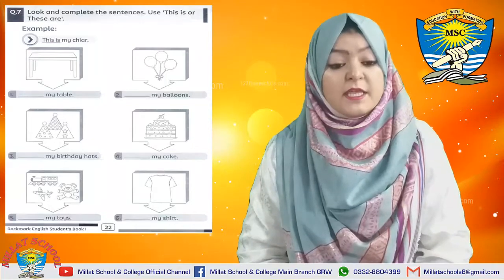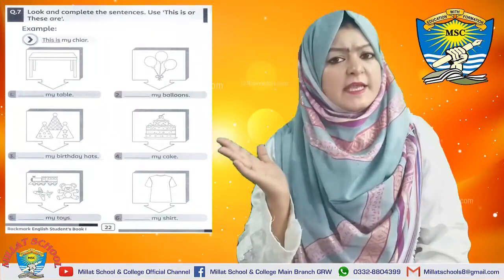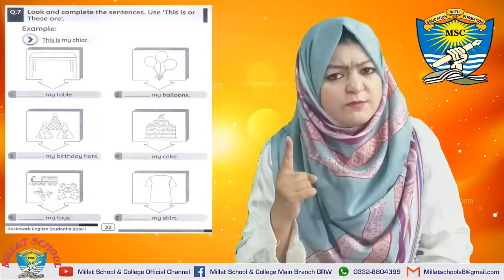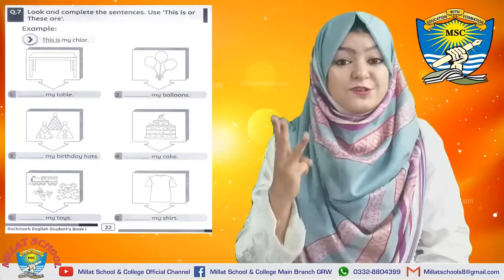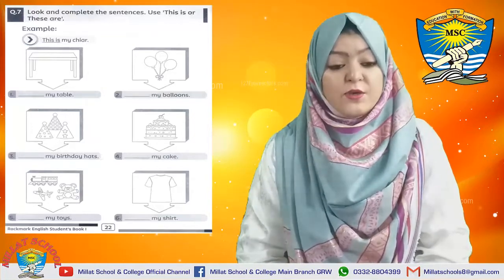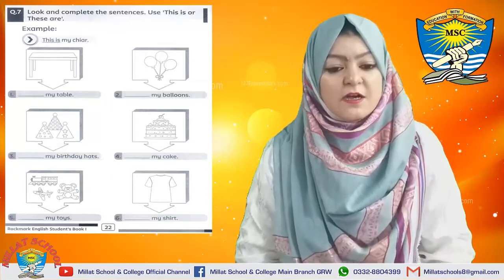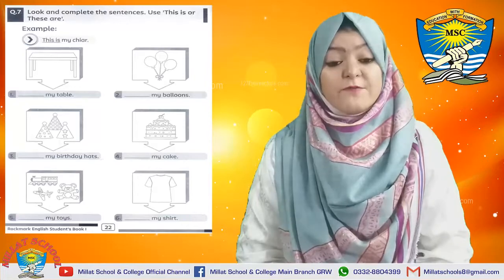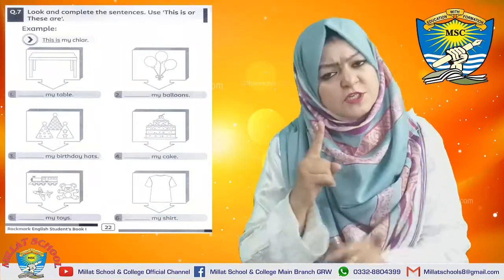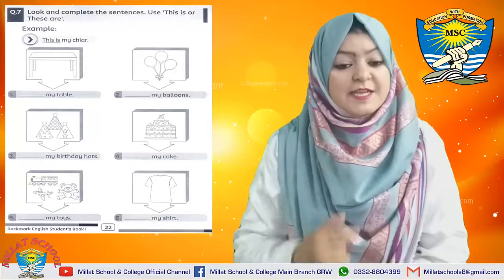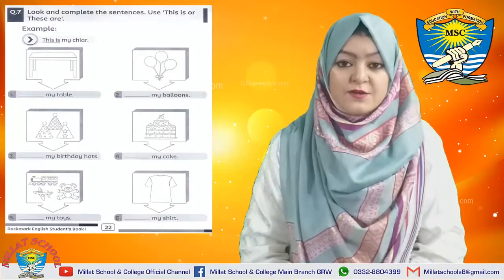The third sentence is about birthday hats. Is it one birthday hat or more? It is not just one — there are three birthday hats. So we will write 'These are my birthday hats.' Now there is a picture of a cake. Is it just one cake or more cakes? It is a single cake, so we will write 'This is my cake.'